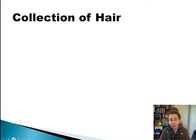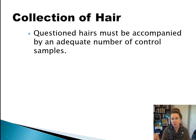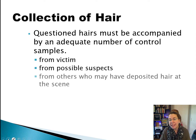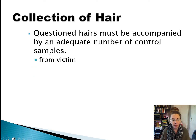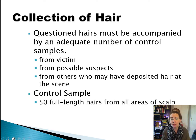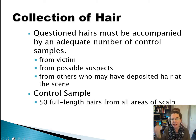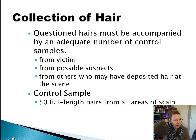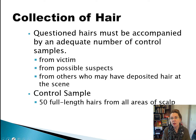How are hairs collected from a crime scene? Usually questioned hairs have to be accompanied by an adequate example of control samples, either from a suspect or a victim. We might also collect hairs from others who might have deposited hair at the scene. A control sample is usually 50 full-length hairs taken from random places on the scalp, because different areas on the head can have a different hair texture — for example, some people have one patch of hair that's super curly while the rest is wavy.